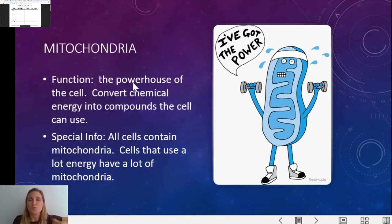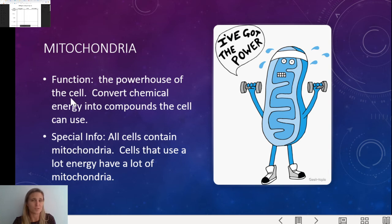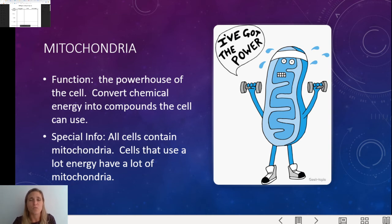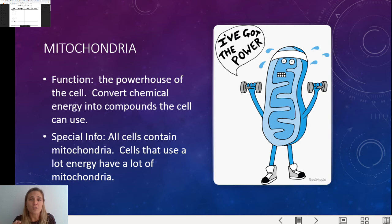Mitochondria may be one of the single most important organelles you'll hear about — you'll hear about it constantly throughout the rest of the year. The mitochondria is the powerhouse of the cell. If you don't remember anything else about the mitochondria, remember that sentence: the powerhouse of the cell — it will be on a test. Its job is basically to take your food and make it into ATP, which is stuff the cell can use as energy. Special info: all your cells have mitochondria, and cells that use a lot of energy have a lot of mitochondria. If you see lots of mitochondria under the microscope, that cell uses a ton of energy.